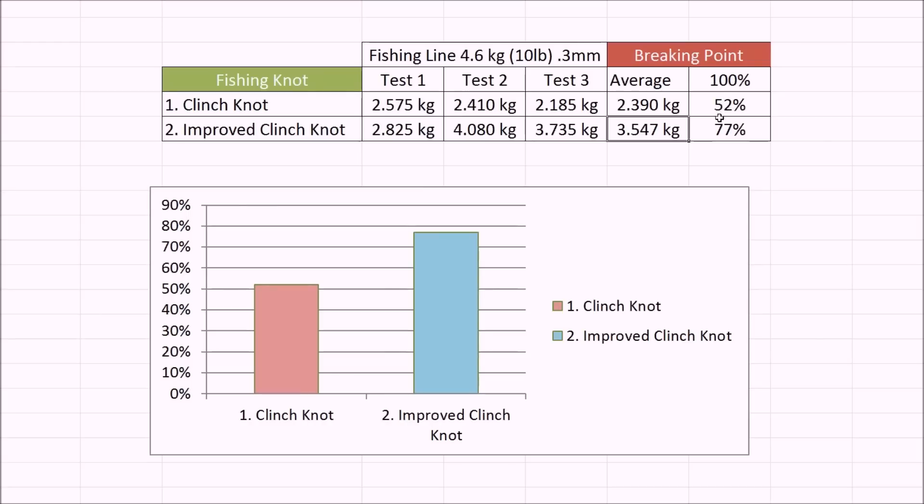For improved clinch knot it's a much better figure, 77% of the capacity of the fishing line, which is more than 50% stronger.